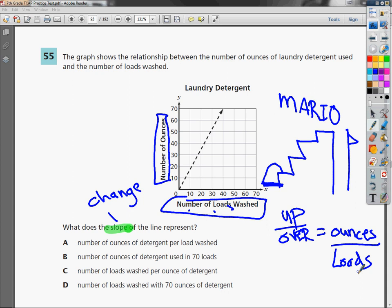So let's look at the answer choices that are available. A says the number of ounces of detergent per load washed. Ounces per load. This one looks really good to me. But let's check the other ones, make sure they're not the other answers.